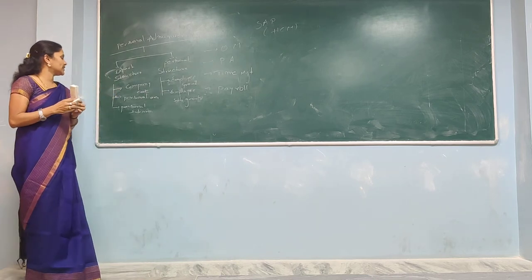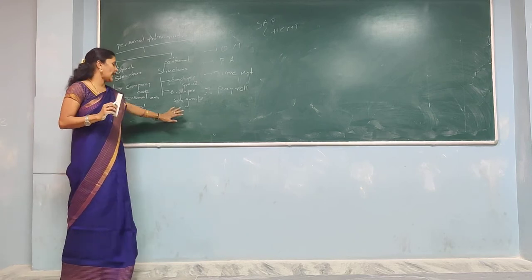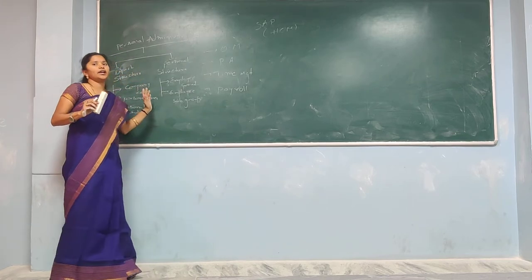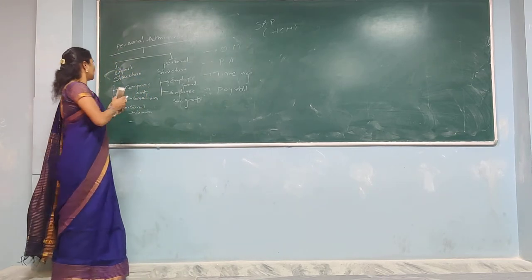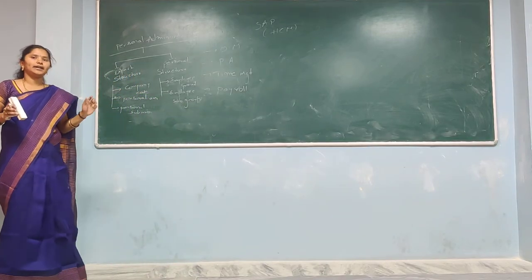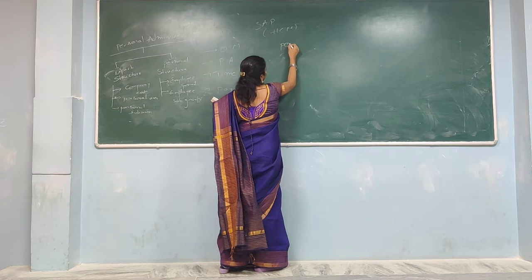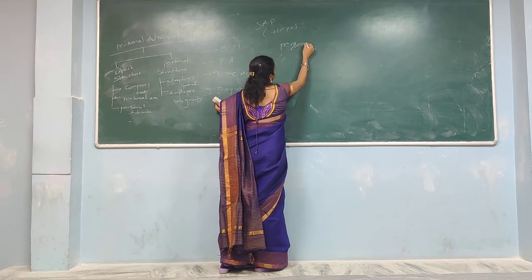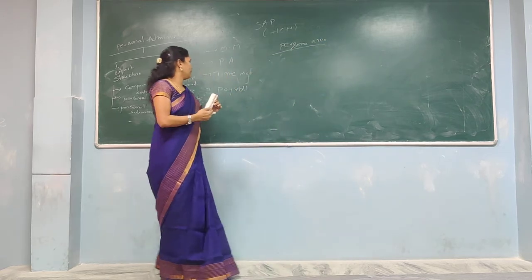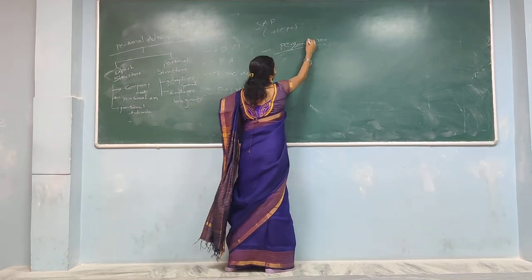Personal administration is majorly used in an organization to assign the employee ID. When calculating leaves and time, they are calculated using this employee ID only. Company code is mainly designed by the finance expert team in an organization. Personal area is the geographical location where the company is located.